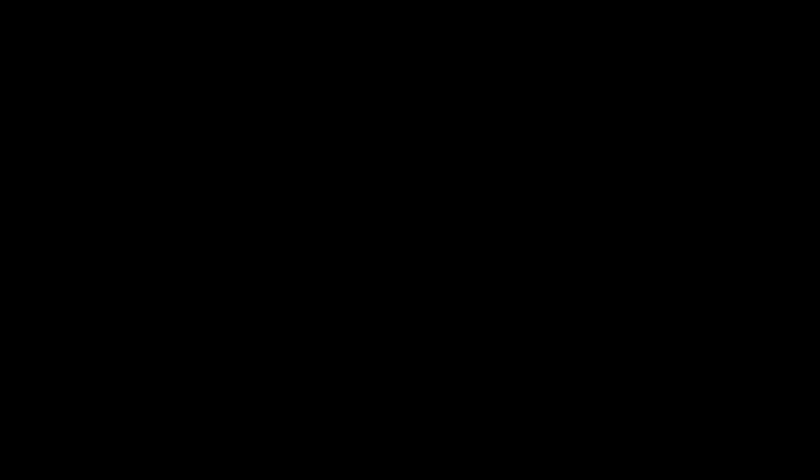We're going to go over some of the common themes that come up when talking about blockchains, cryptocurrencies, and Web3. We'll begin with decentralization. I want to make a distinction between distribution and decentralization. A distributed network is one in which the nodes are distributed, typically geographically. A decentralized network, at least in the most common understanding, refers to nodes being controlled by different entities with no specific entity having control over the entire network. However, people talking about decentralized networks in the case of blockchains are often actually talking about distributed networks.